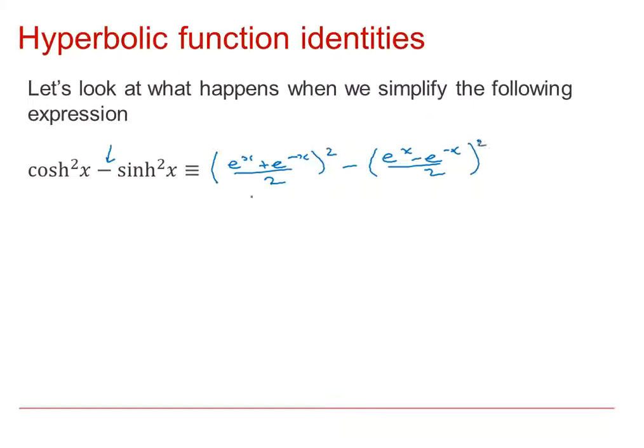So there's cosh x squared minus sinh x squared, which we've seen before. So I'm going to pull out a quarter as a common factor as I expand these brackets. So we're going to get e to the 2x. Be careful with this middle term. e to the x times e to the minus x is 1, and it will occur twice in the expansion of the brackets. Plus e to the minus 2x minus, again just pulling out the quarter, e to the 2x. There'll be a minus 2 in the middle of this expansion, plus e to the minus 2x.